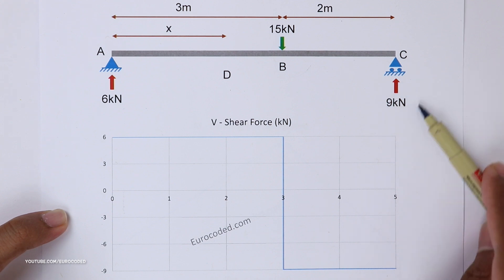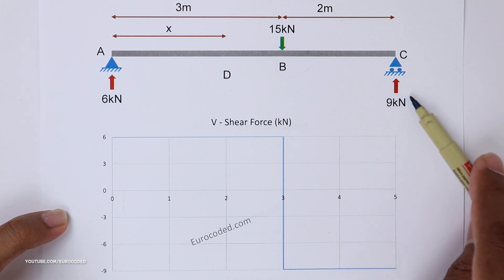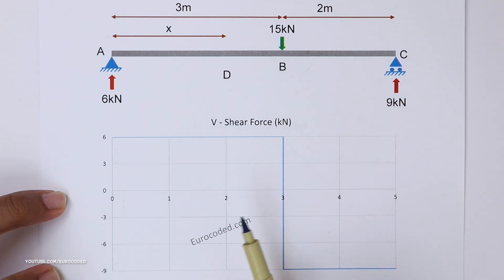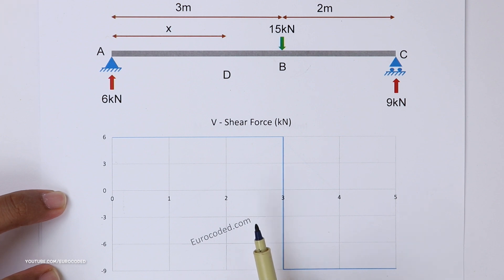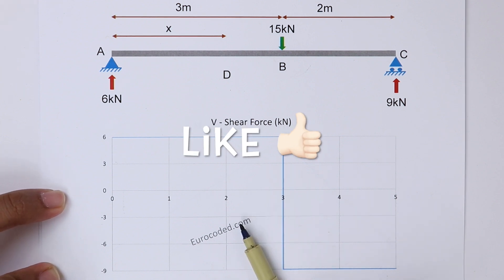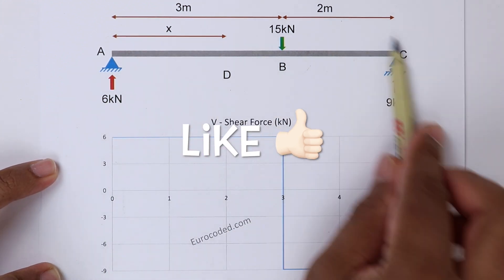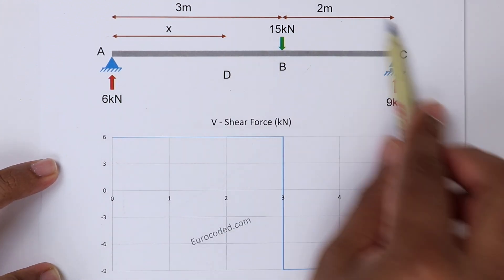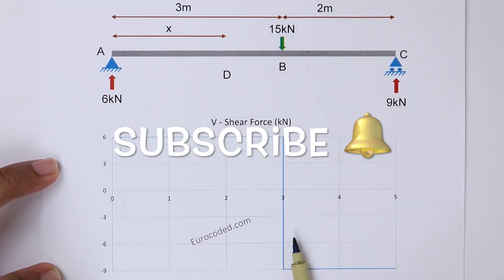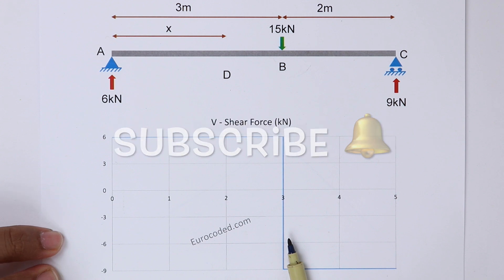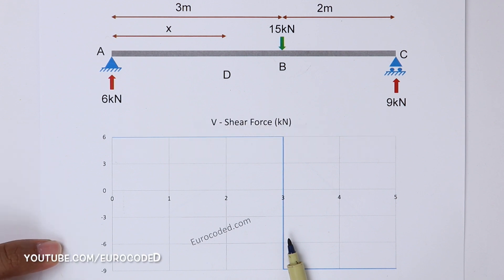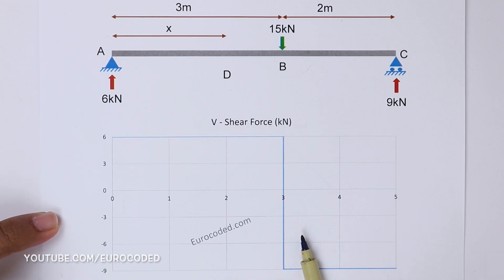You can see that the support reaction at C is also equal to 9 kN. I hope this video was useful, and we are now fully capable of drawing bending moment diagrams and shear force diagrams for this type of beam arrangement. If you have any questions, post them in the comments below, and if you like the video please like and subscribe to our channel.